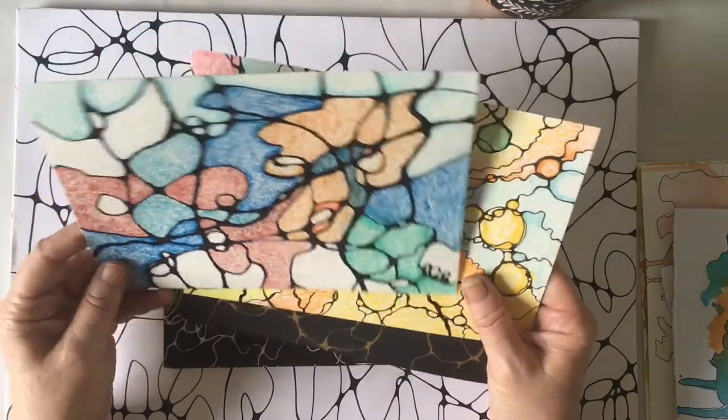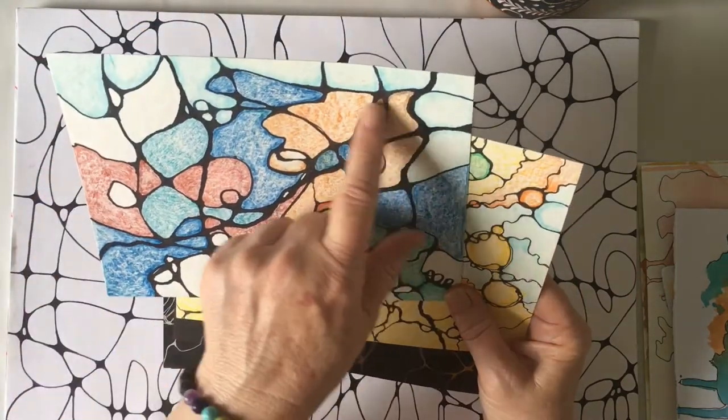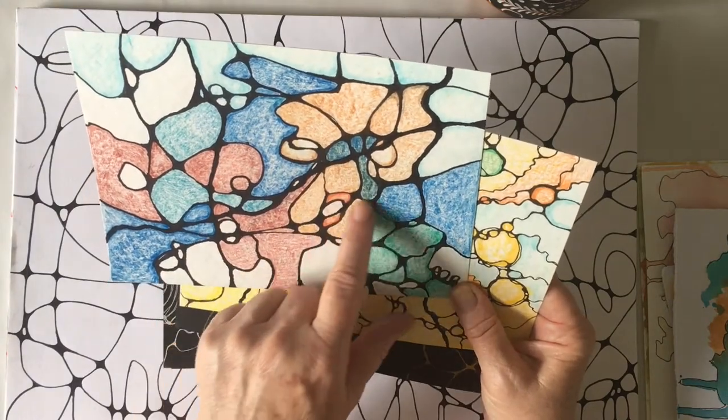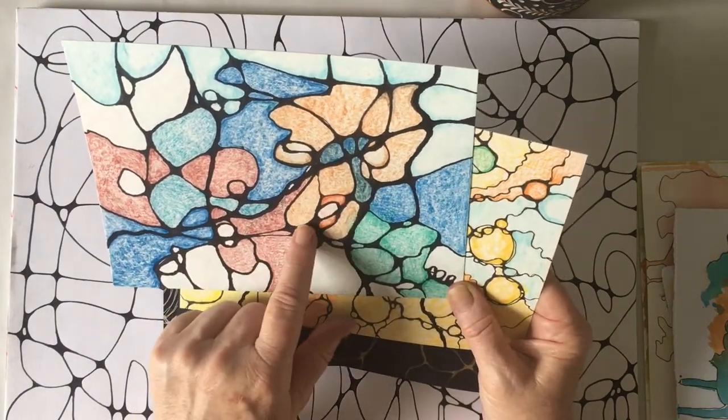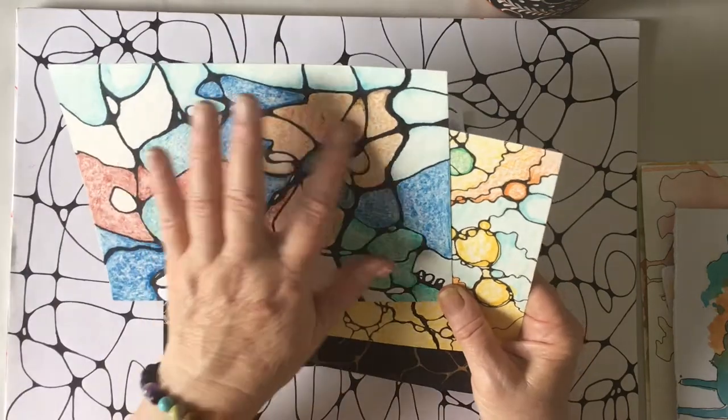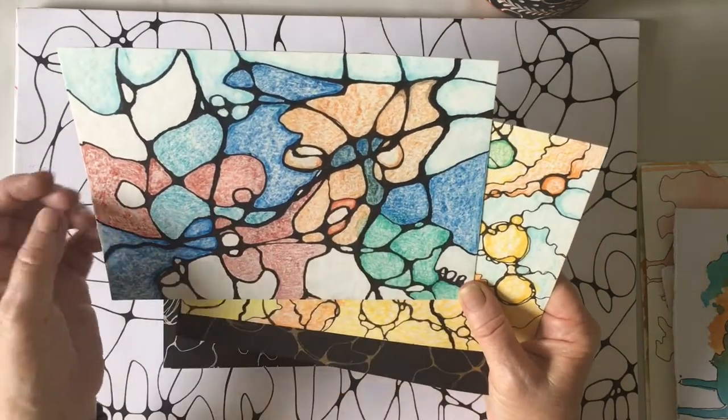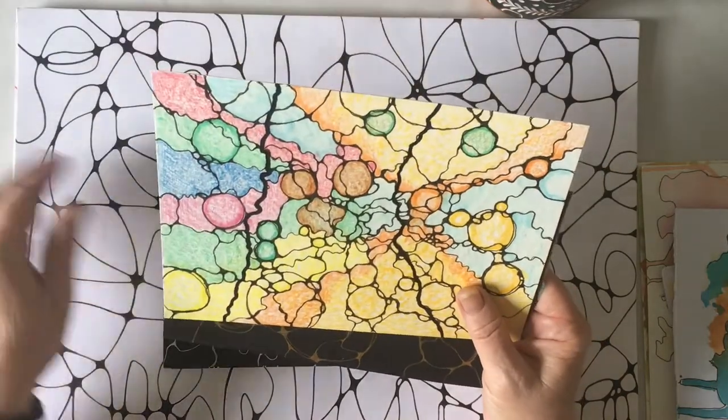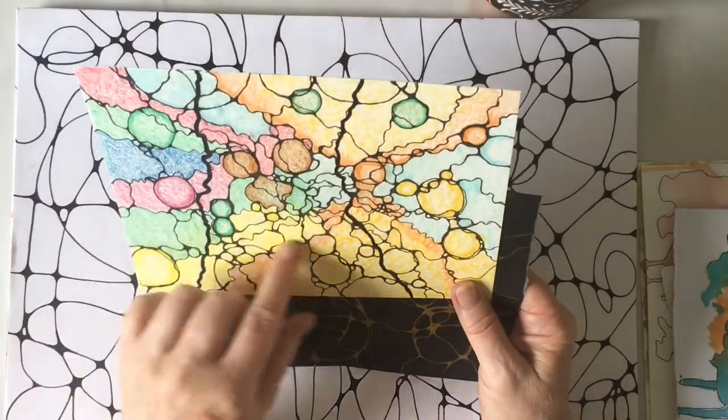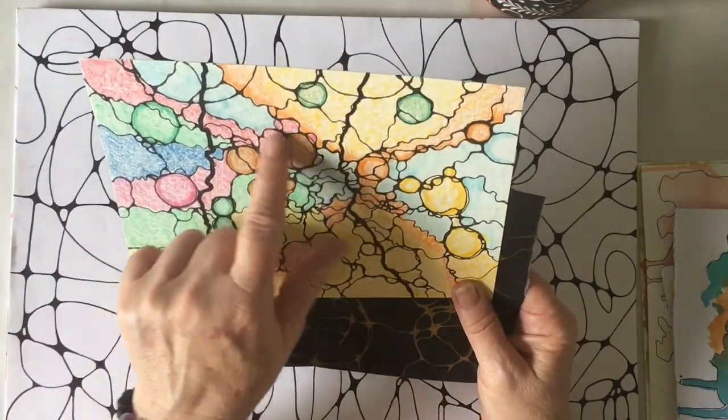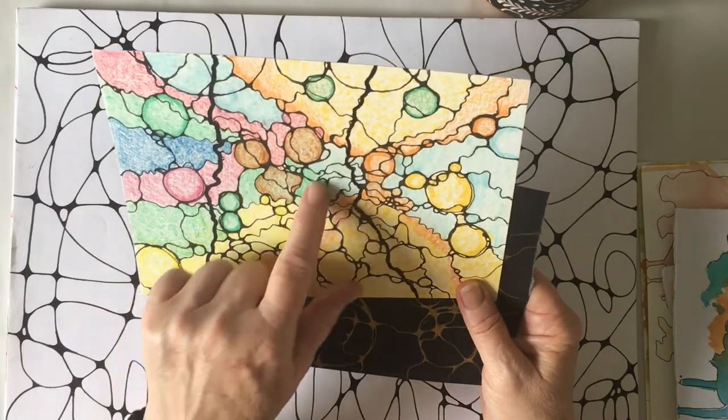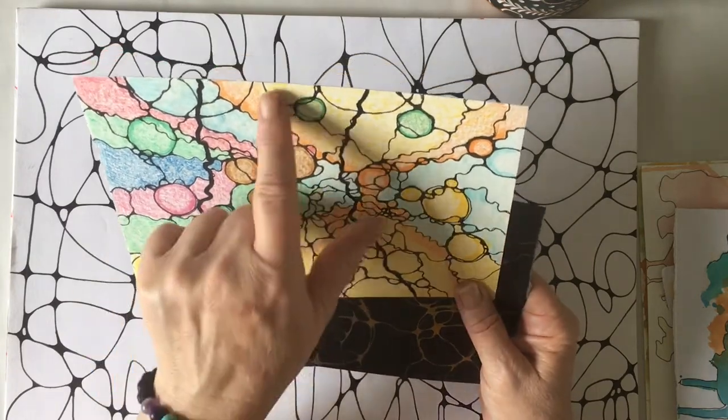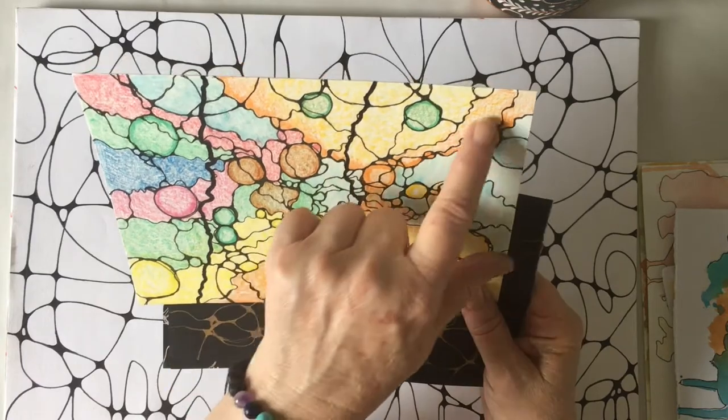So this is one that I colored in and I loved how this, I see it as a lion, but you could see it differently. And this one I loved how there's a parrot there and even something up here could be another lion.